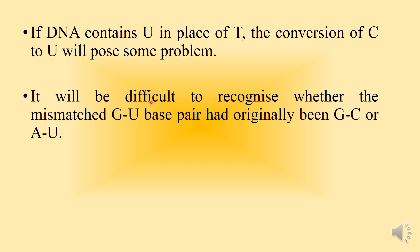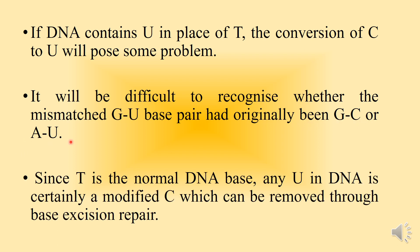It would be difficult to recognize whether a mismatched G-U base pair was originally G-C or was it A-U. Since thymine is the normal DNA base, any uracil found in DNA is identified as a modified cytosine that must be removed through the base excision repair mechanism.